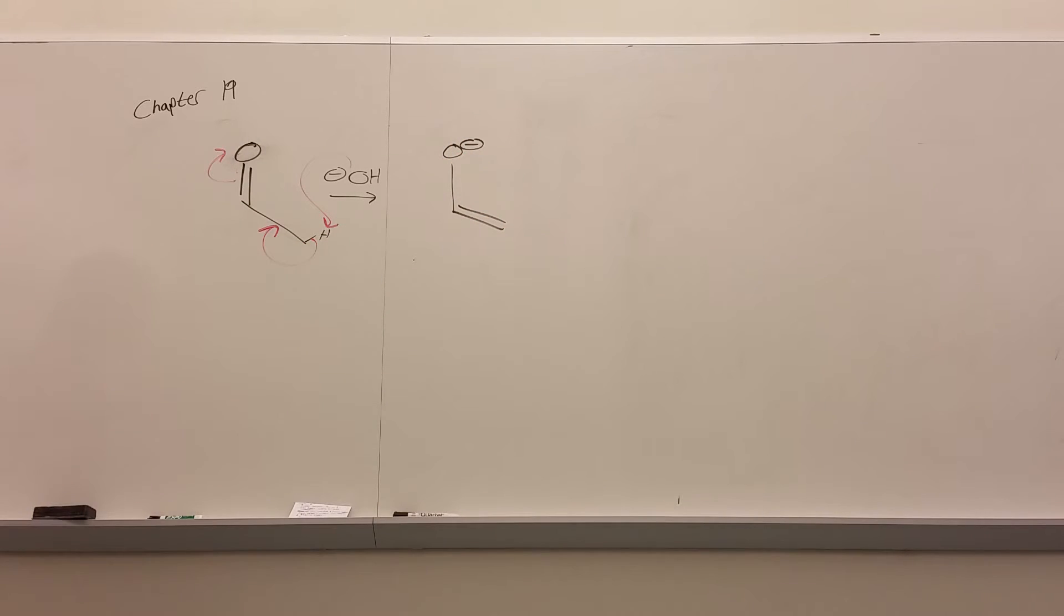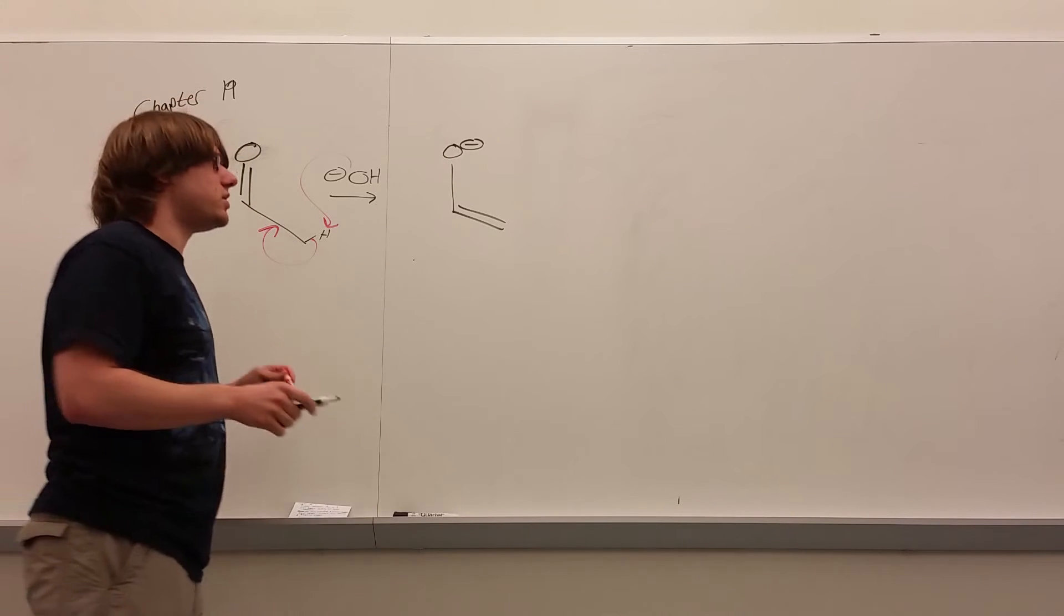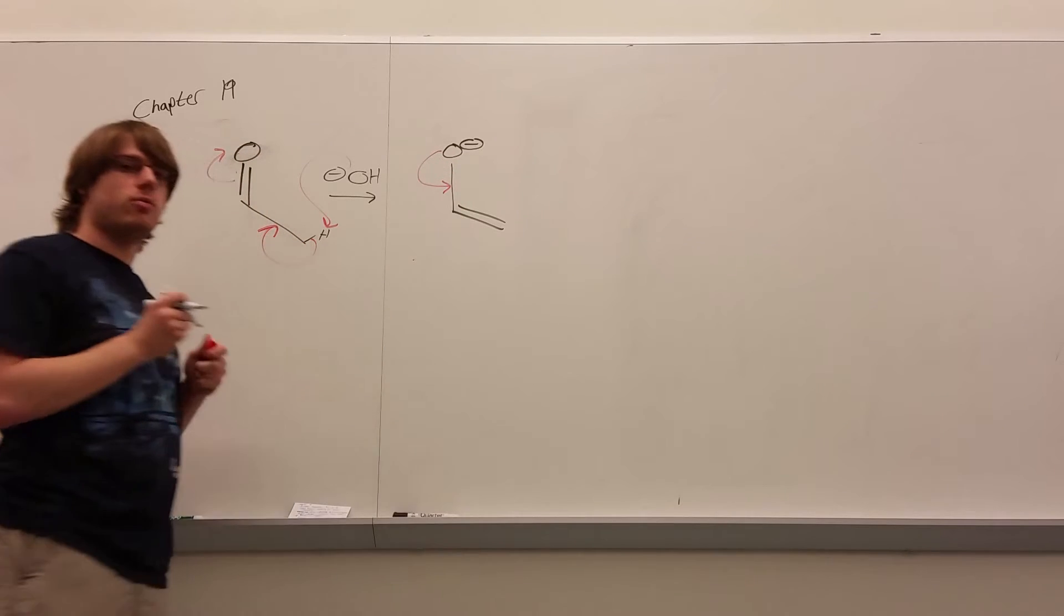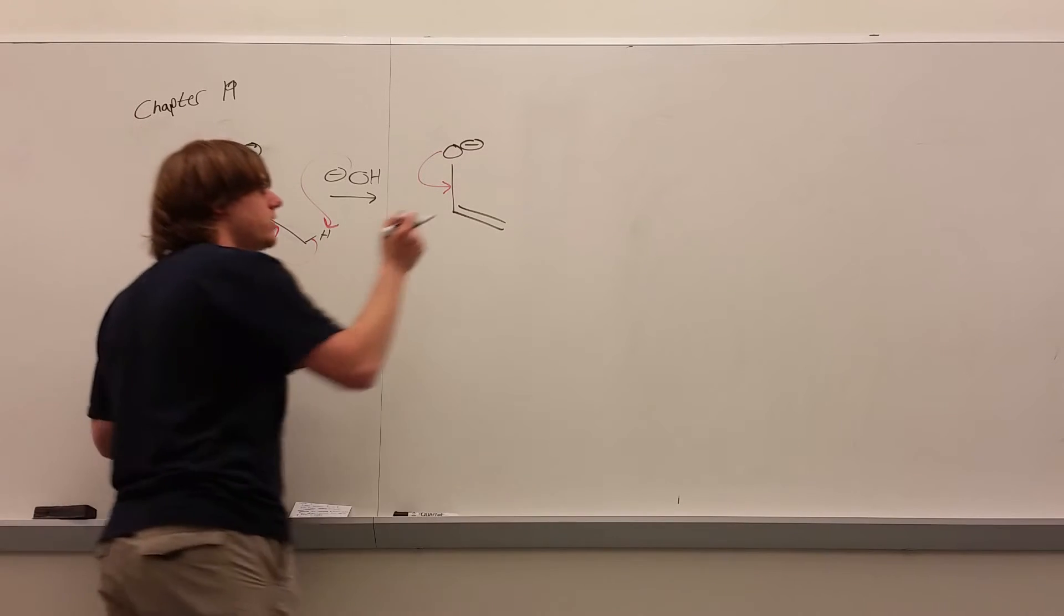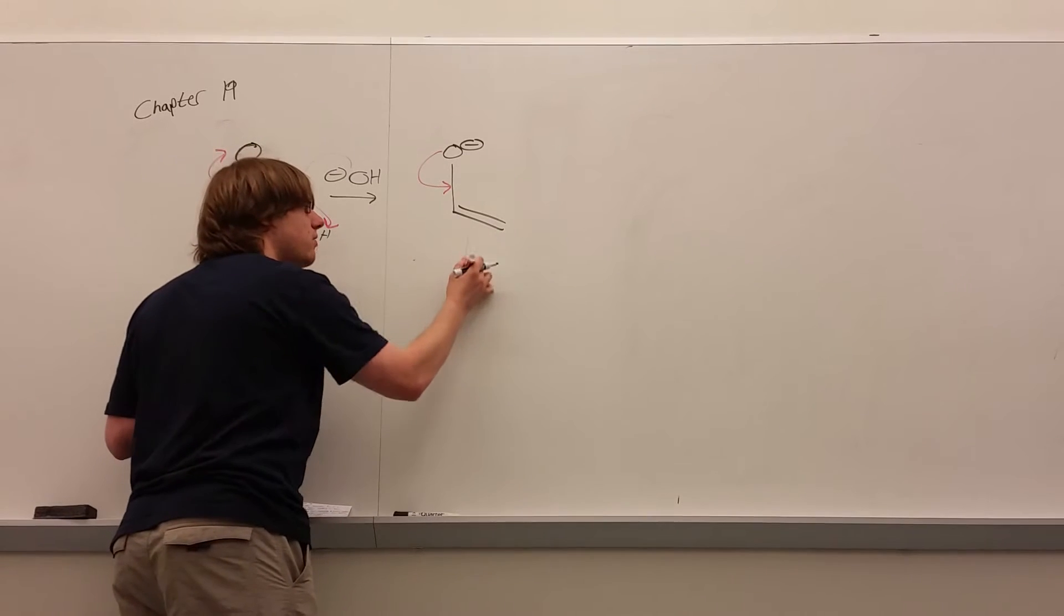One important point to always remember about your enolates, though, is that the O- is almost never the thing that does the attack, because that O- always looks to swing back down and reform the double-bond O, which means the electrons from this double-bond are what get kicked out and do the attacks.